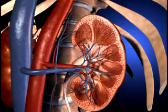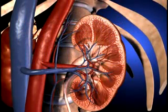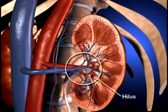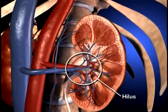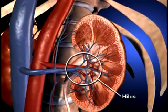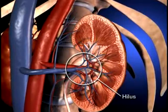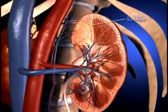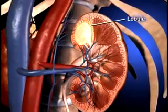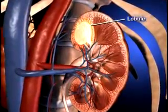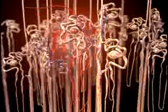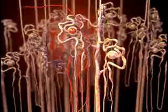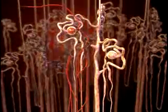The medial border of the kidney is indented by a deep fissure called the hilus, where the blood vessels, nerves, and ureters connect to the kidney. The kidney is composed of up to 18 lobes. Each lobe is composed of nephrons. Nephrons are the functional units of the kidney, and each kidney contains more than one million nephrons.